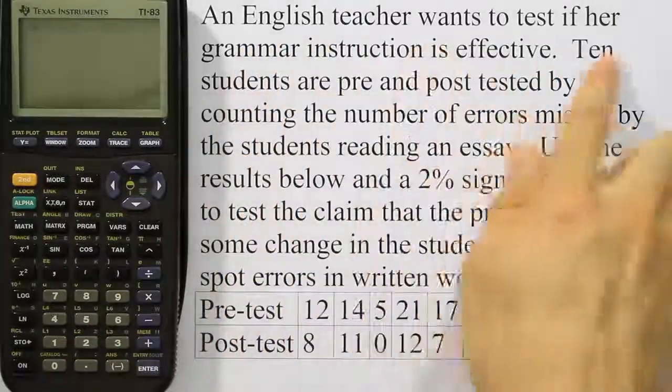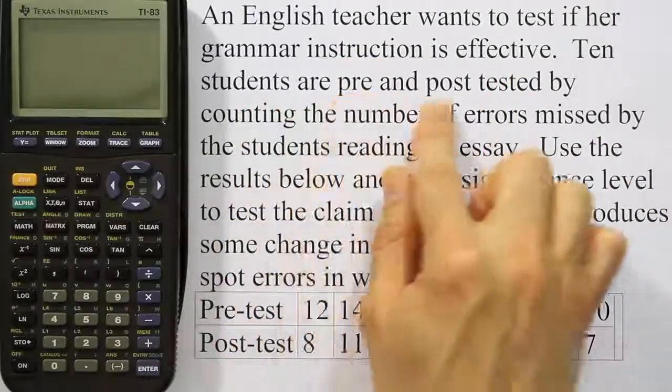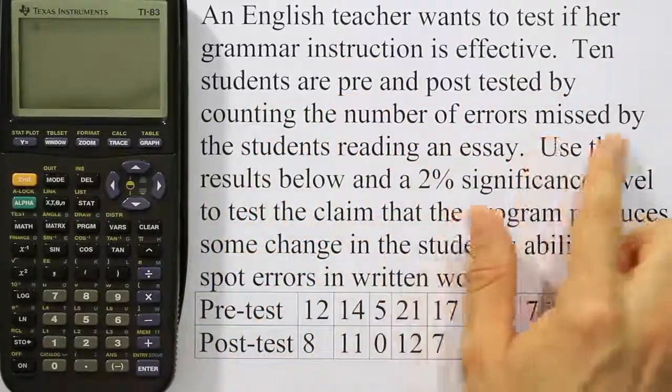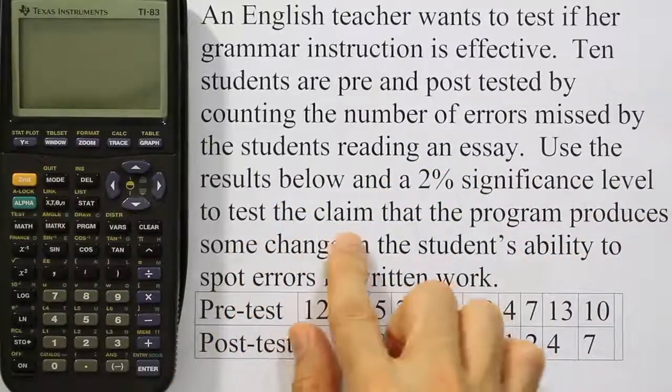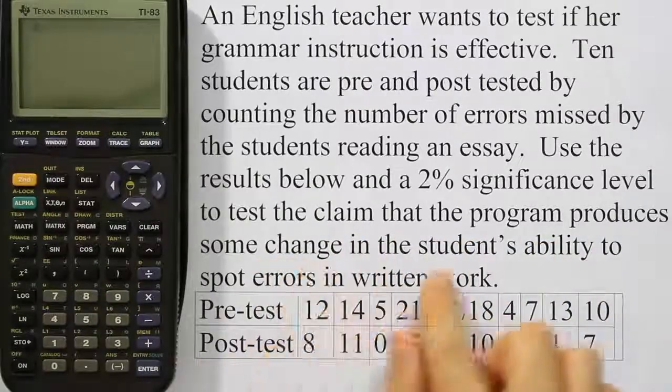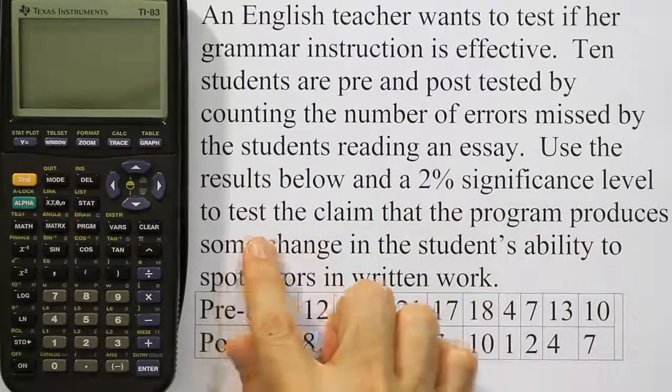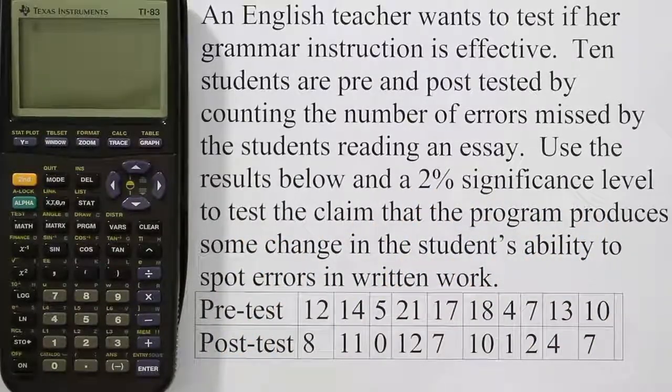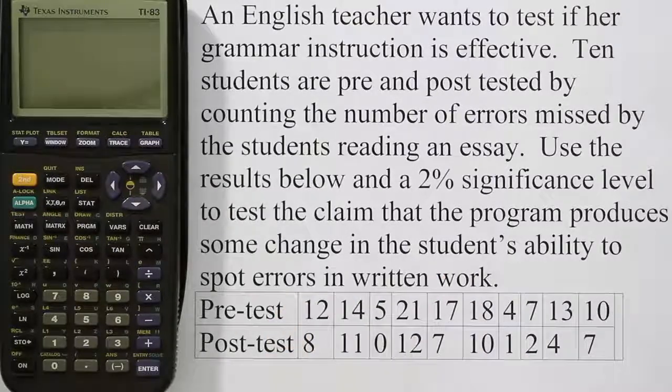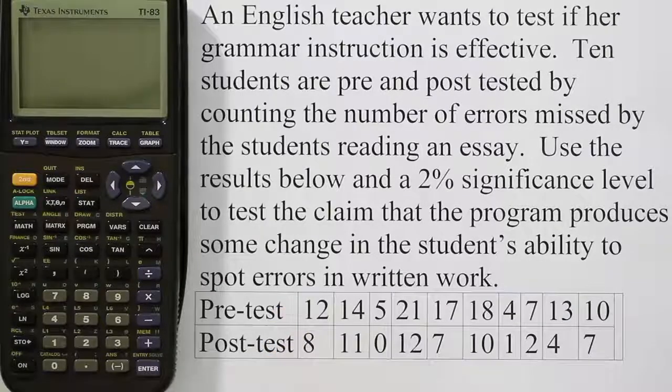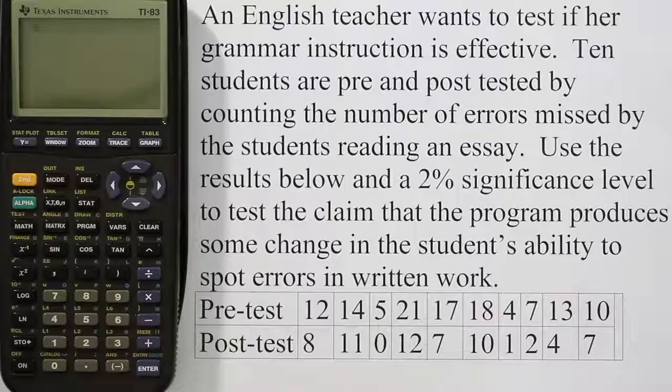An English teacher wants to test if her grammar instruction is effective. Ten students are pre- and post-tested by counting the number of errors missed by the students reading an essay. Use the results below and a 2% significance level to test the claim that the program produces some change in the student's ability to spot errors in written work. This 2% significance level and the phrase test the claim make me feel that this is a hypothesis test. The layout of the data and the description of the problem tells me that this is a dependent t-test. Each student was pre-tested and post-tested, so every student gets measured twice, so the data has that dependency in it.